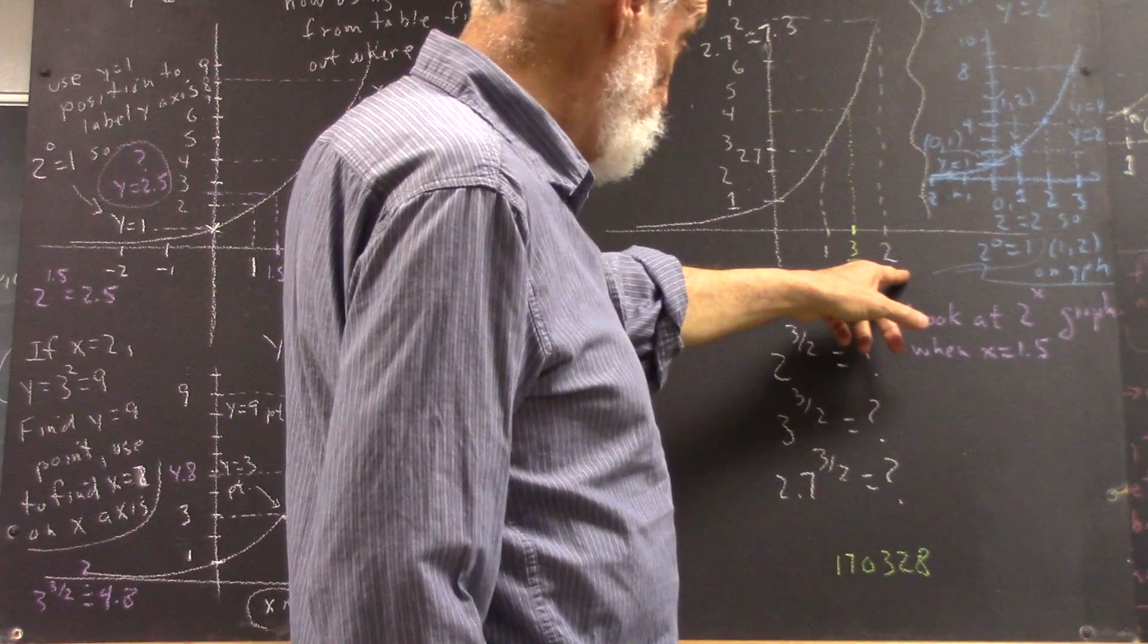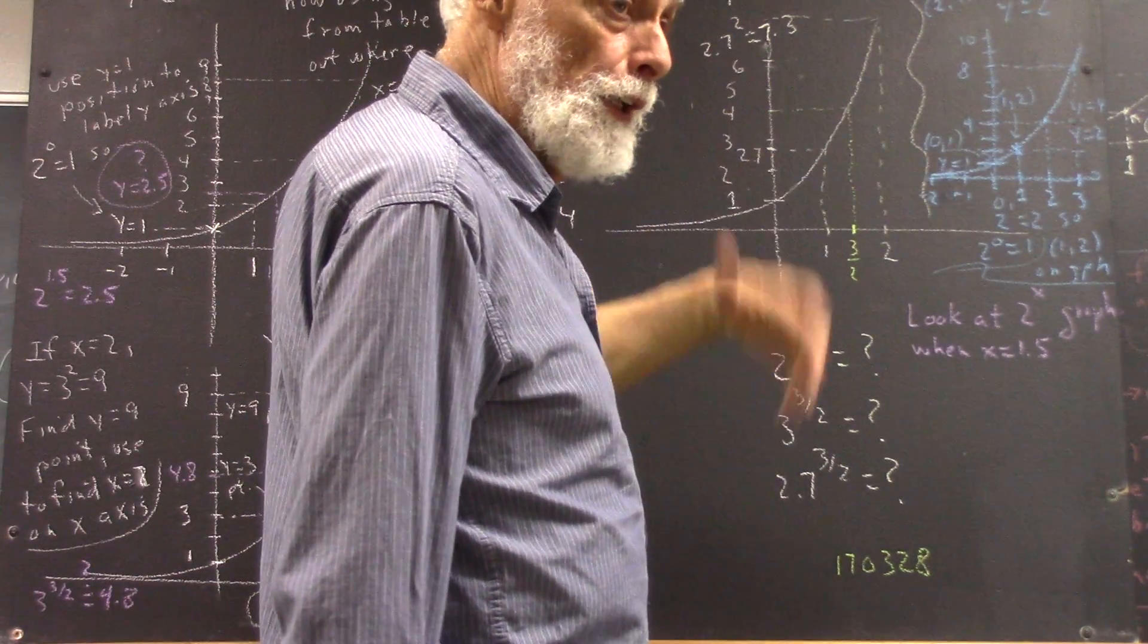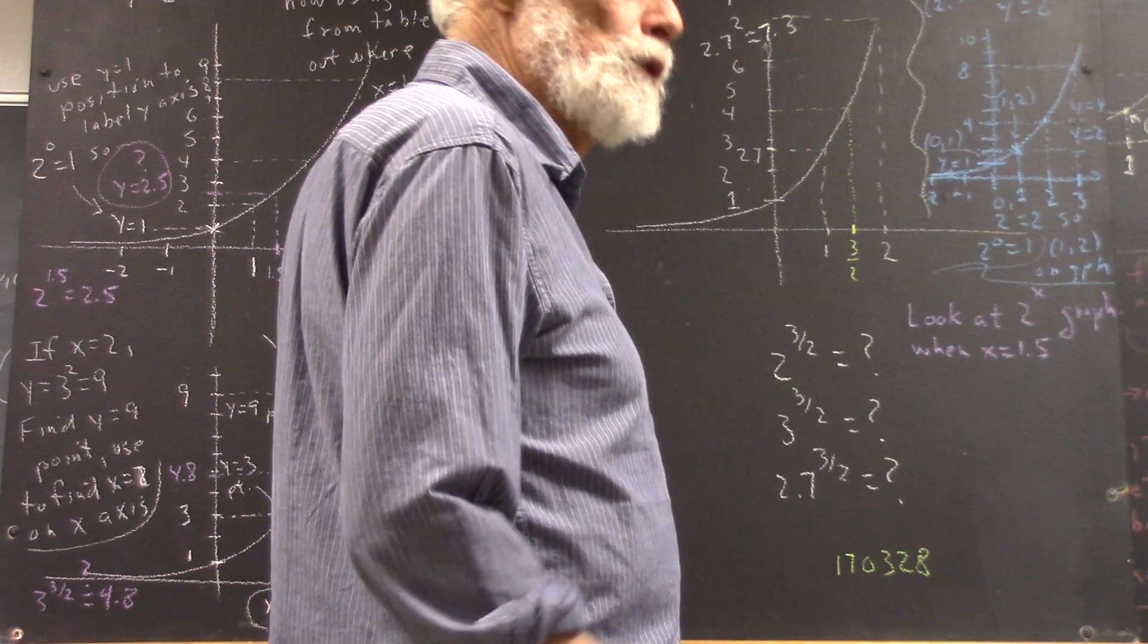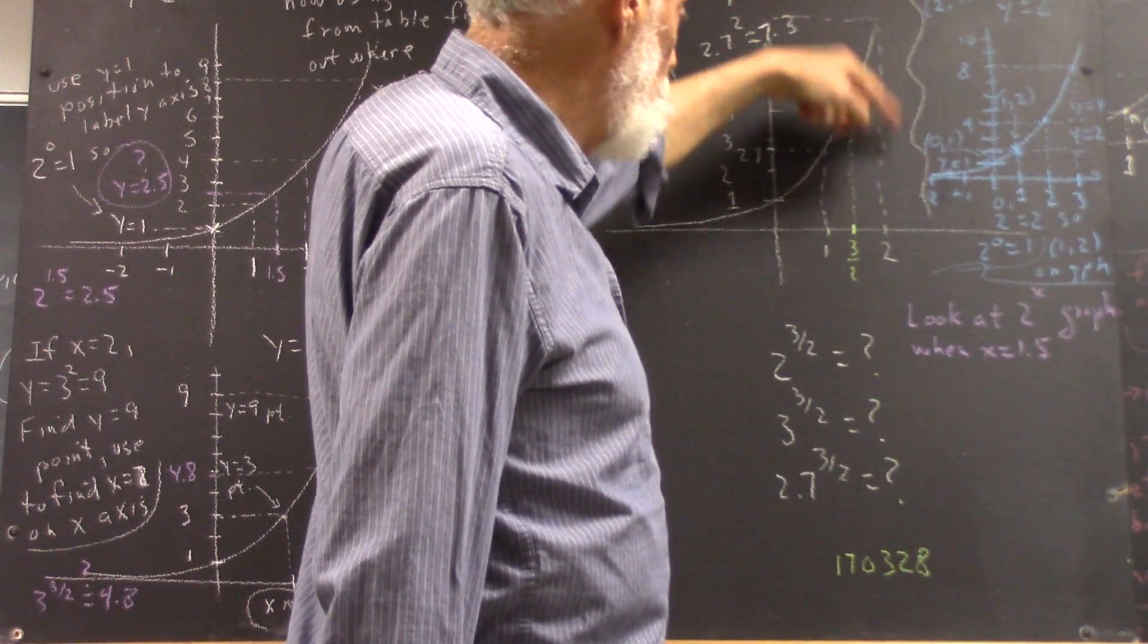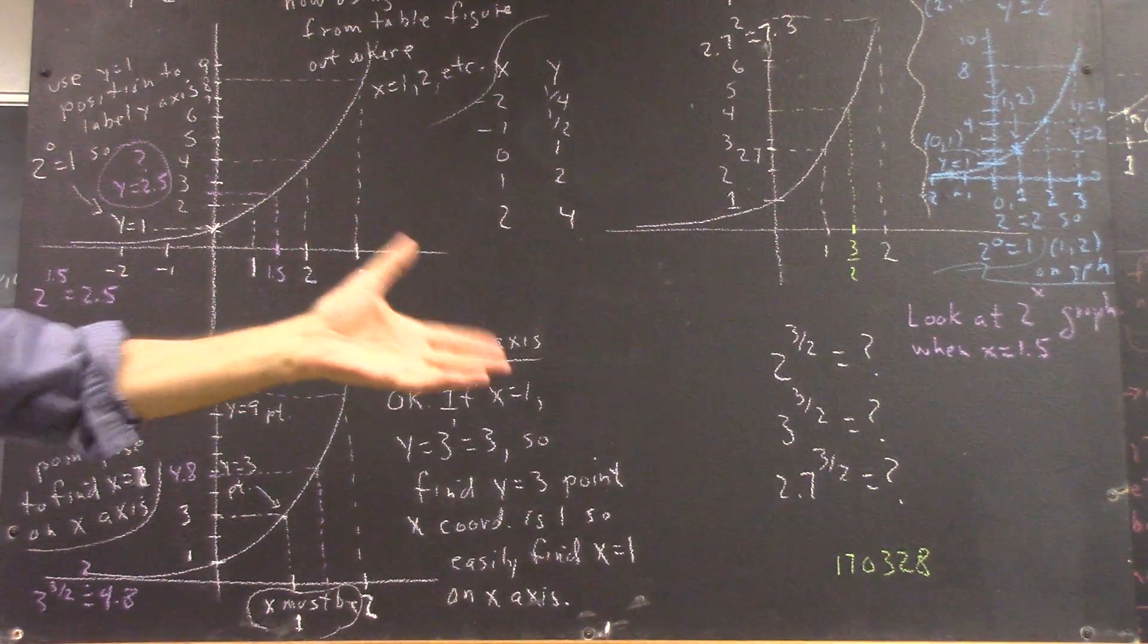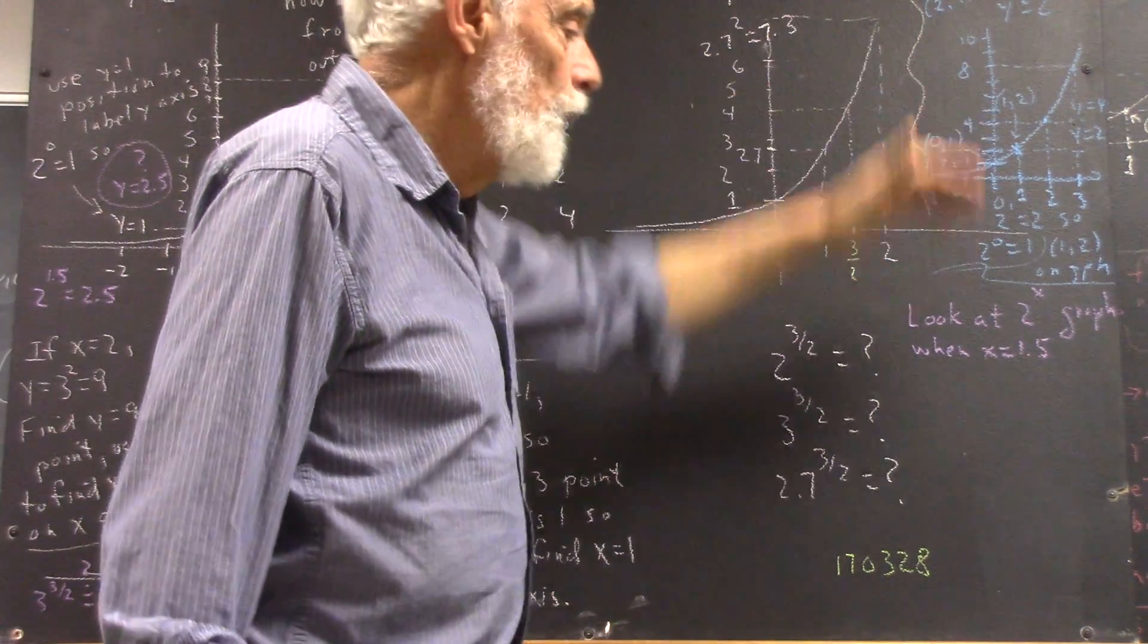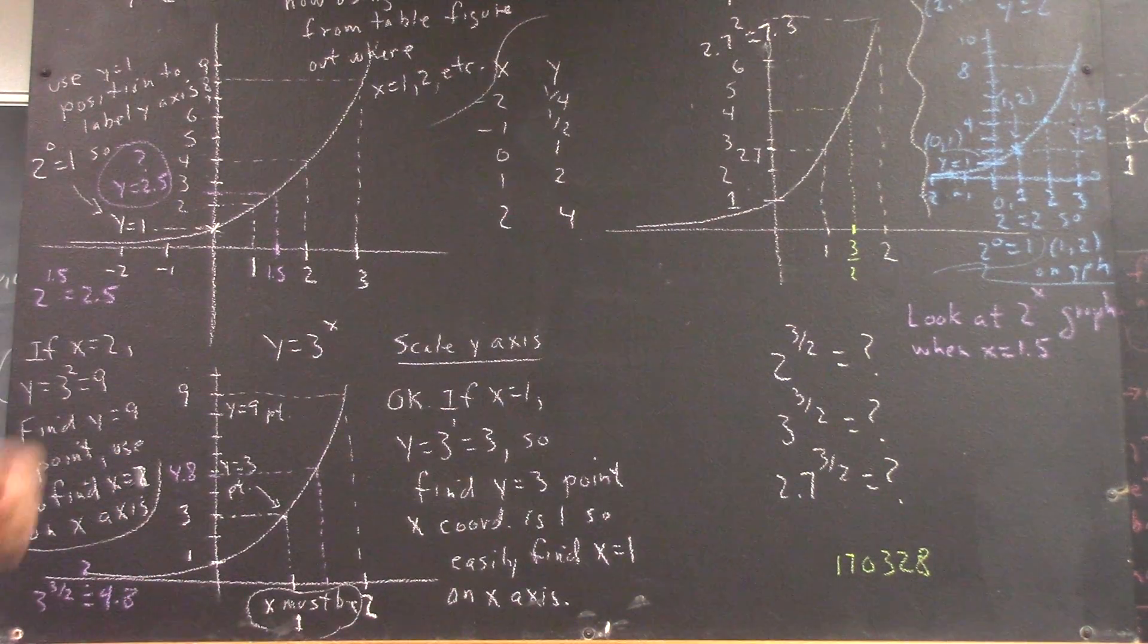And then I told you what 2.7 squared is. So if you want to find the x equals 2 point, you square 2.7, you get 7.3, roughly. So you look at 7.3, you project over and down. That's where x equals 2. Same process, but the numbers that you locate from your y-axis are going to change with your base. So you want to kind of be comfortable with that idea.